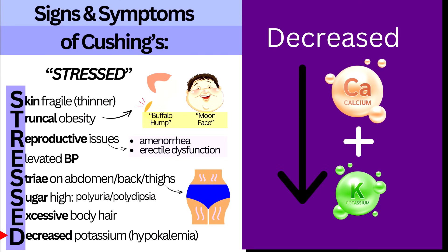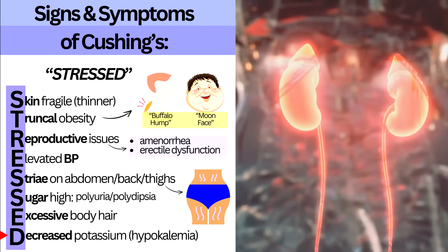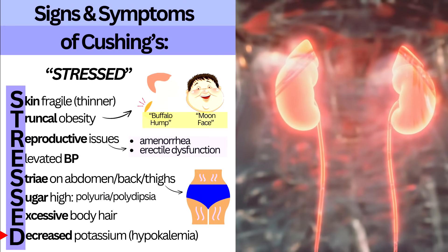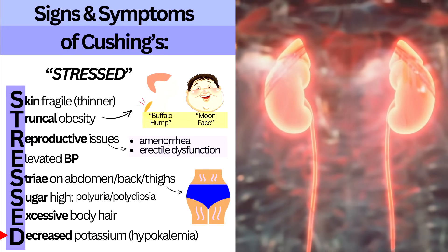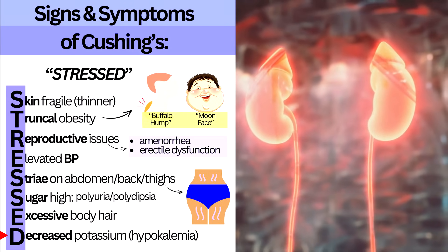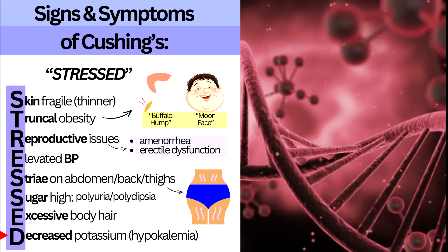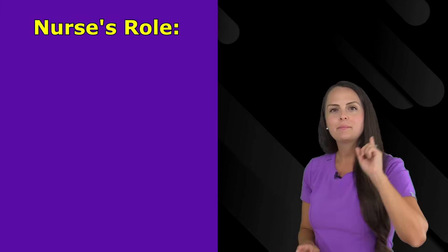E is for Excessive body hair: coarse dark hair on the center of the body like the face, back, and chest, as well as the extremities, due to increased secretion of androgens. D is for Decreased potassium and calcium levels: we know why hypokalemia occurs. For hypocalcemia, high cortisol impairs calcium reabsorption in the kidneys, causing calcium to be excreted in urine rather than reabsorbed into the blood. High cortisol also decreases the ability to activate vitamin D, which is needed for calcium absorption, potentially leading to bone problems.